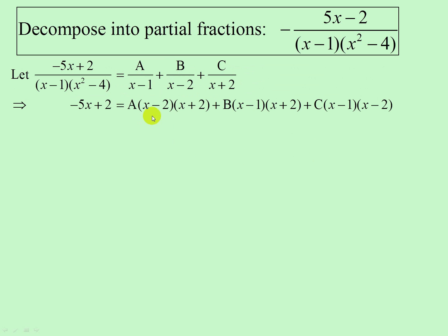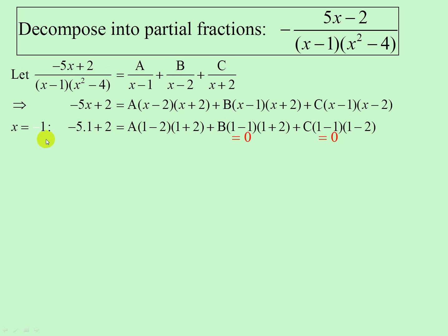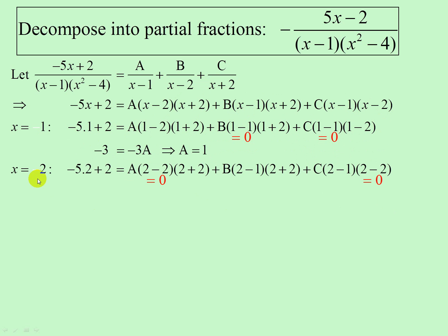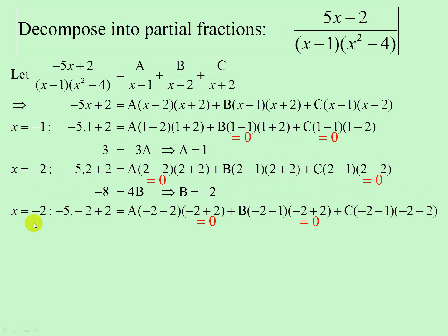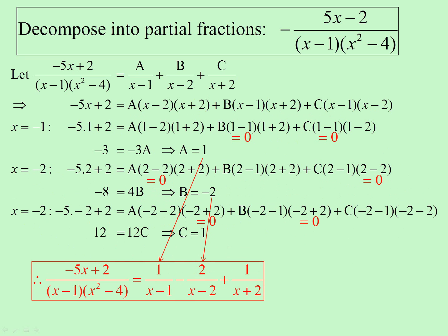To find A, the relevant factors are x minus 2 times x plus 2 — if we substitute x equals 1, those two go and we end up with A equaling 1. To find B, substitute x equals plus 2 to get rid of the x minus 2 terms — that gives us B equaling negative 2. To find C, I substitute x equals negative 2, because that gets rid of A and B, and therefore C equals 1. There are our partial fractions.